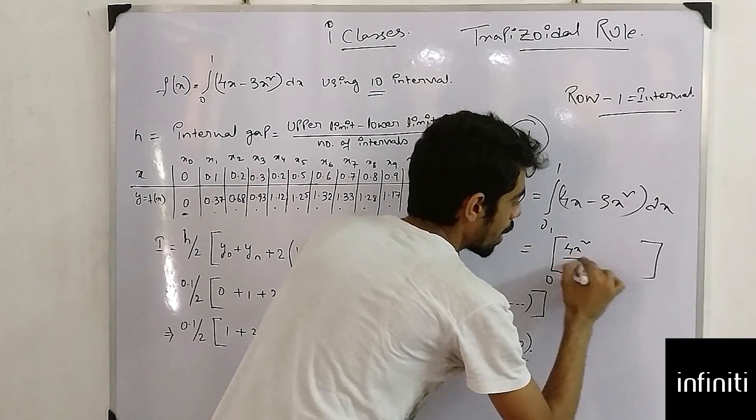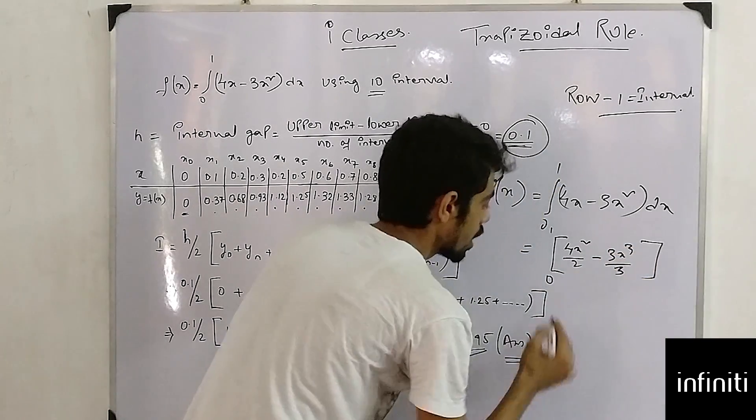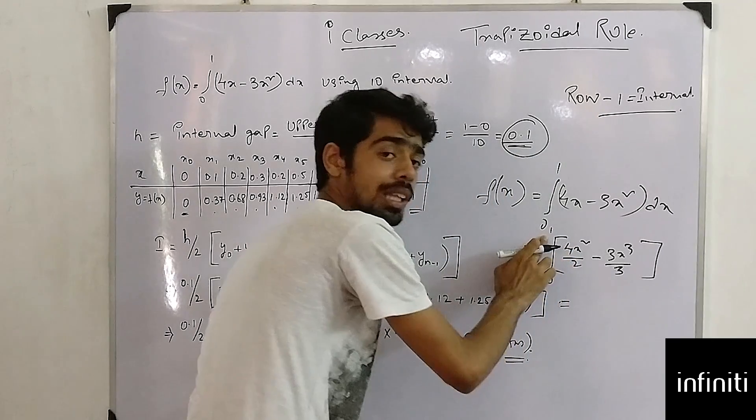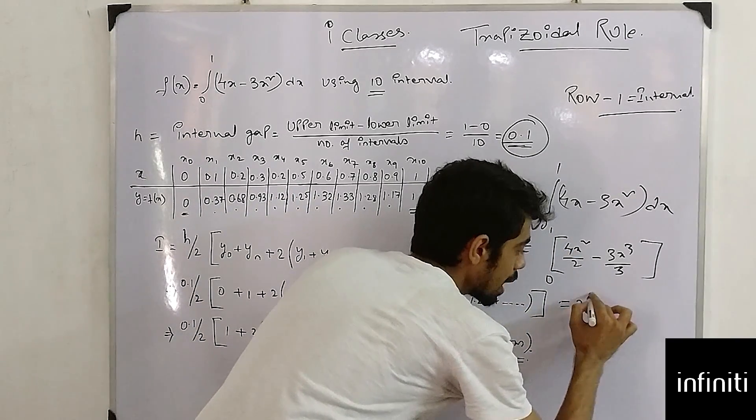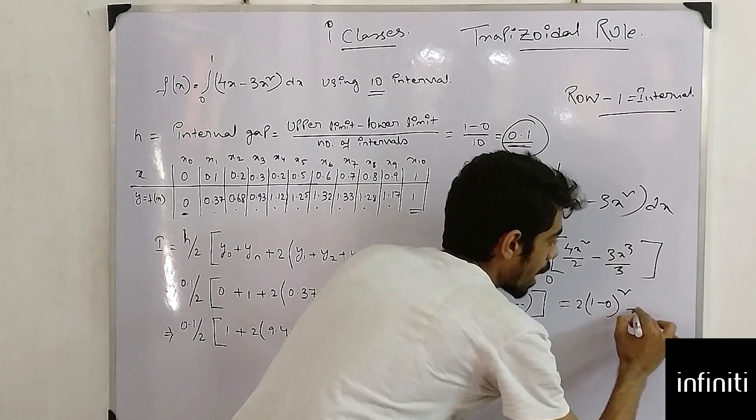4x squared by 2 minus 3x cubed by 3. Again I am just putting the value: I am just putting the upper limit minus lower limit, which is 4 by 2 which is 2. Upper limit is 1 minus 0 whole square minus 3,